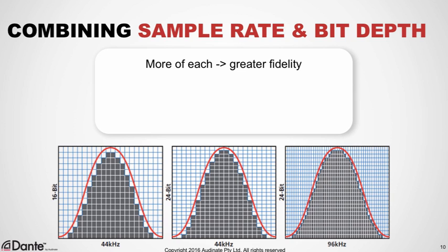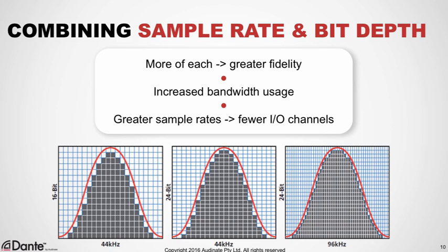It does make sense that increasing both sample rate and bit depth will increase the bandwidth required to transmit the signal. A higher sample rate means more samples per second, and a higher bit depth means that each sample is that much larger. For this reason, many products that support multiple sample rates offer reduced channel counts at higher sample rate values, as they are constrained by the rate of data they can provide.